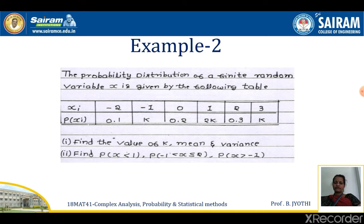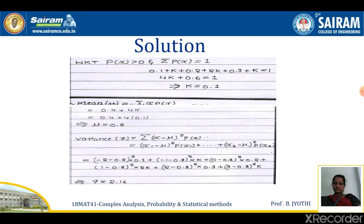In order to answer, we first need to find k using the condition that Σ p(xi) = 1. Adding all p(xi) values: 0.1 + k + 0.2 + 2k + 0.3 + k = 1. That gives 4k + 0.6 = 1, so 4k = 0.4, and therefore k = 0.1.